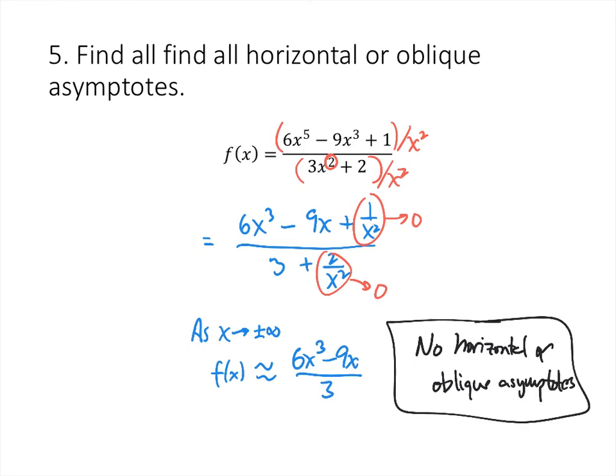If we look at the powers on the top and the bottom, the highest power on the top is 5 and the highest power on the bottom is 2. Since the top is more than one degree higher than the bottom, that's how we know we don't have any horizontal or oblique asymptotes.